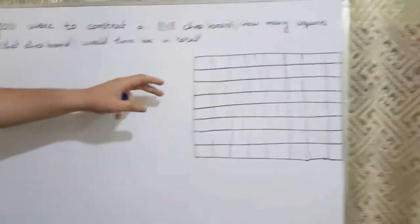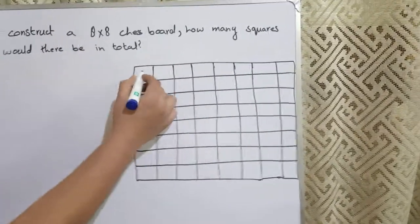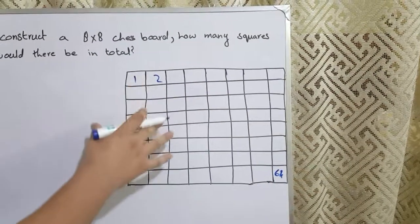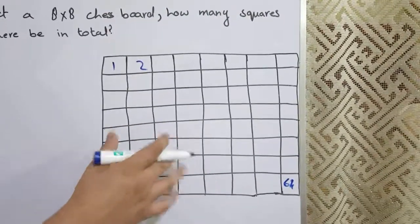So basically, when we see an 8x8 chessboard, we only see that there are 64 blocks in total. Like, there's 1, 2, and then there's 64 in total. But if you see it more carefully, you can see more squares being constructed within this 8x8 chessboard.